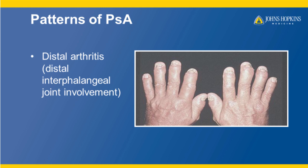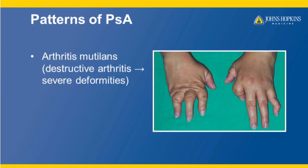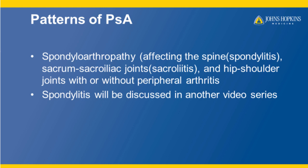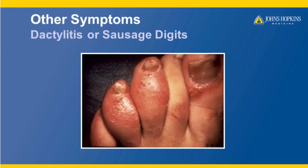You can see in this photograph how swollen and angry looking those knuckles closest to the fingernails look. Arthritis mutilans is a destructive form of psoriatic arthritis, and it causes severe deformities, as seen in this picture of these hands. Another pattern of psoriatic arthritis is spondyloarthropathy, which affects the spine, the sacrum, sacroiliac joints, and the hip and shoulder joints. Spondylitis will be discussed in another series of videos.